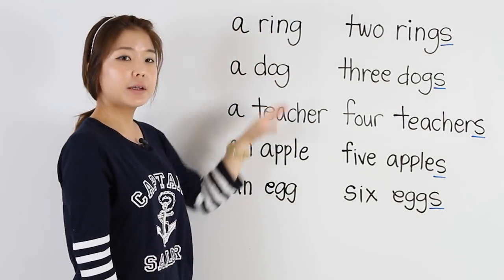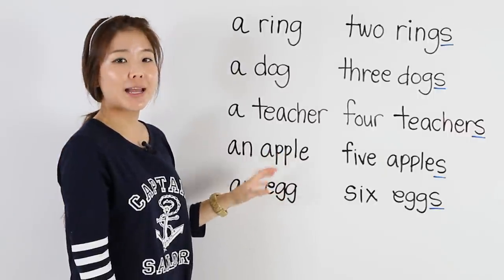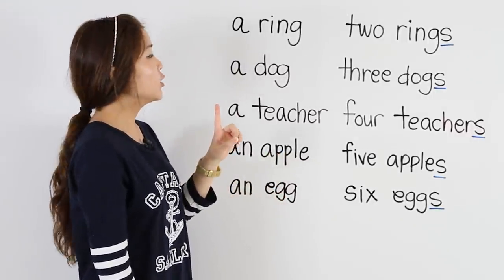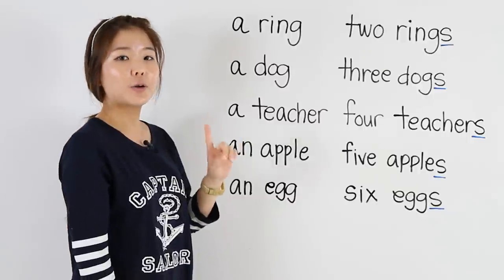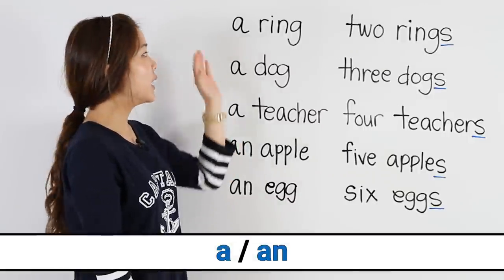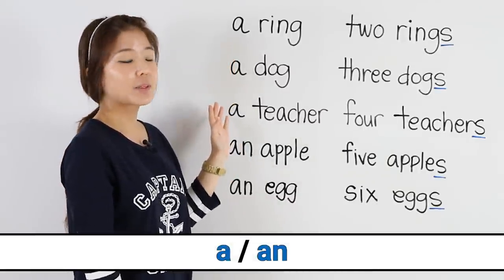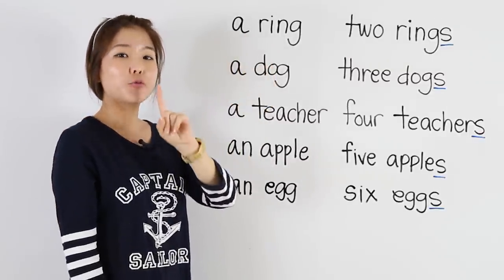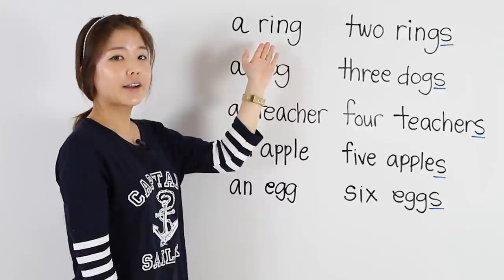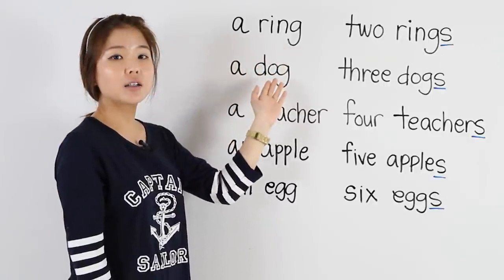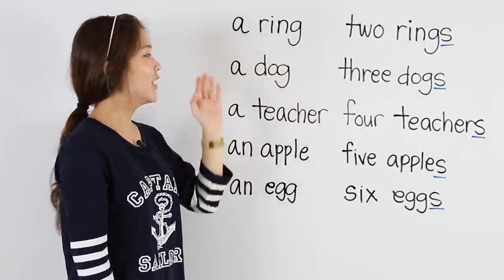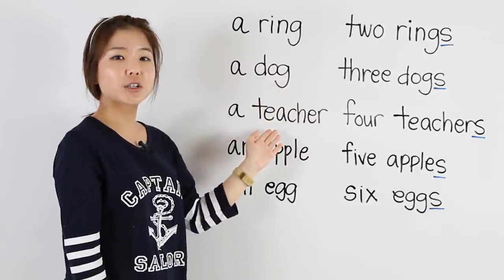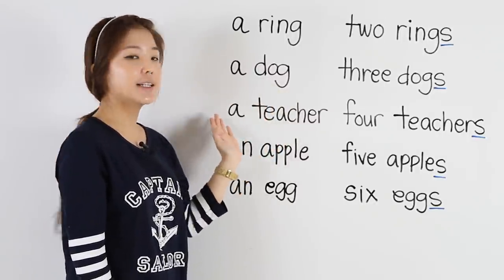This part is showing singular nouns. Remember, singular means one. So when the noun is singular, we put 'a' or 'an'. So let's look: a ring — that means one ring. A dog — one dog. A teacher — one teacher.